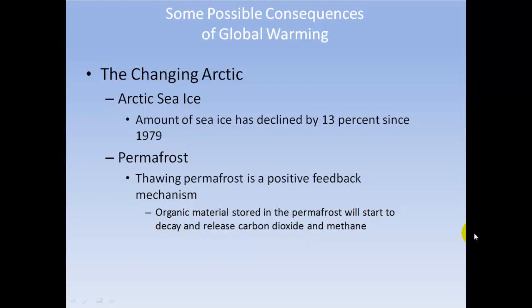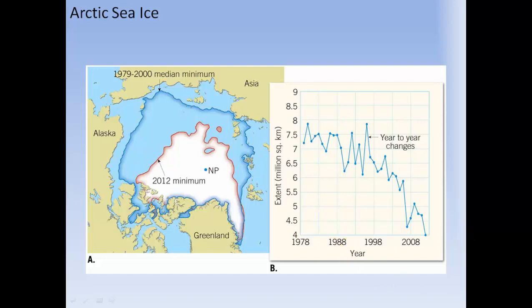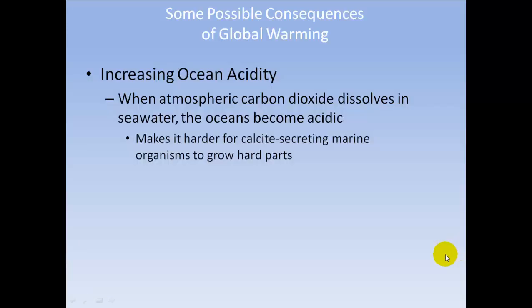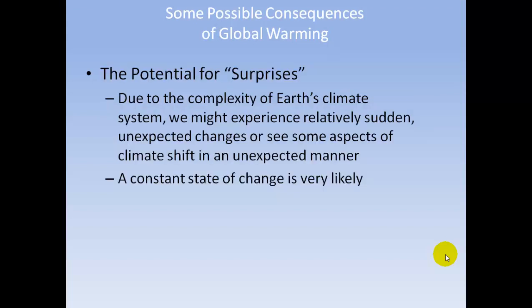The changing Arctic: Arctic sea ice has declined by 13% since 1979. Thawing permafrost is a positive feedback mechanism — organic materials stored in permafrost will decay and release more carbon dioxide and methane. The minimum sea ice extent in 2012 was dramatically lower than the 1979–2000 median minimum. Increased ocean acidity: when atmospheric carbon dioxide dissolves in seawater, the ocean becomes acidic, making it harder for calcifying marine organisms to grow hard parts, which affects corals. Due to the complexity of Earth's climate system, we may expect relatively sudden, unexpected changes as the constant state of change continues.